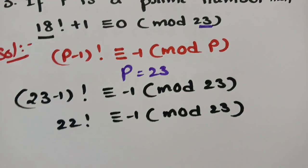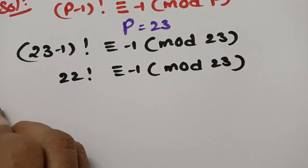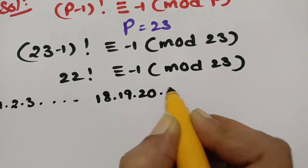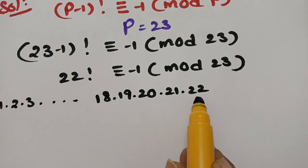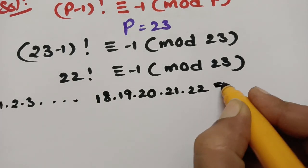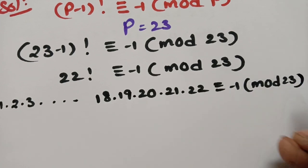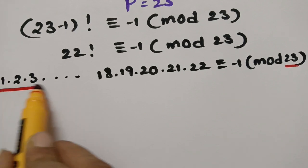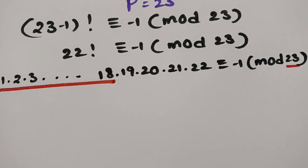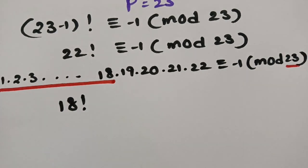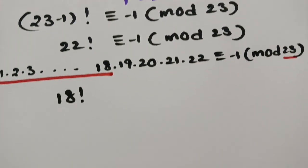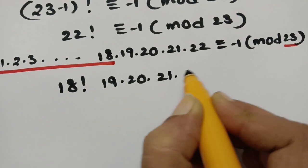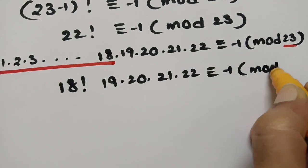We need 18!. So we write 22! = 1 × 2 × 3 × … × 18 × 19 × 20 × 21 × 22, which equals 18! × 19 × 20 × 21 × 22 ≡ −1 (mod 23). We frame 18! because that is what we need from the question.